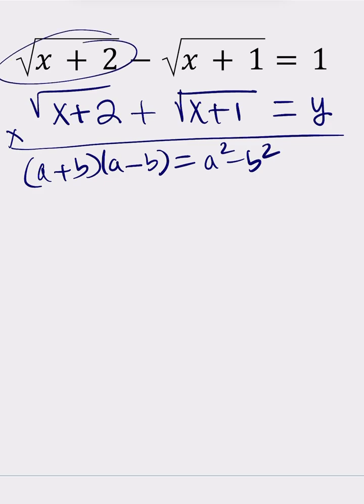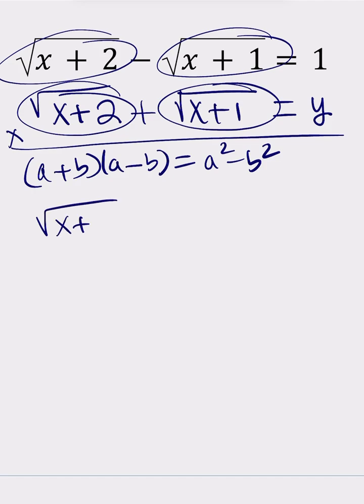When you multiply these two things, this is my a and this is my b, I'm going to be getting √(x+2)² - √(x+1)² = 1 times y, which is y.